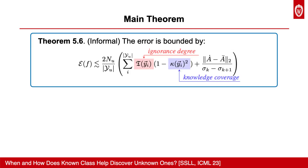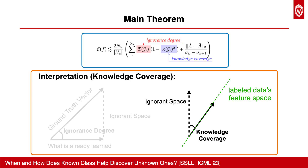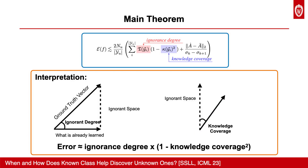Now let me introduce the main theoretical result. The error of novel class discovery is mainly dependent on the ignorance degree and the knowledge coverage. The ignorance degree means the angle between the ground truth vector and the features learned without any prior knowledge. The knowledge coverage means the angle between the ignorance space and the feature space of the labeled data. The error of NCD is thus dependent on how much we can reduce the ignorance degree by knowledge coverage from the labeled data.